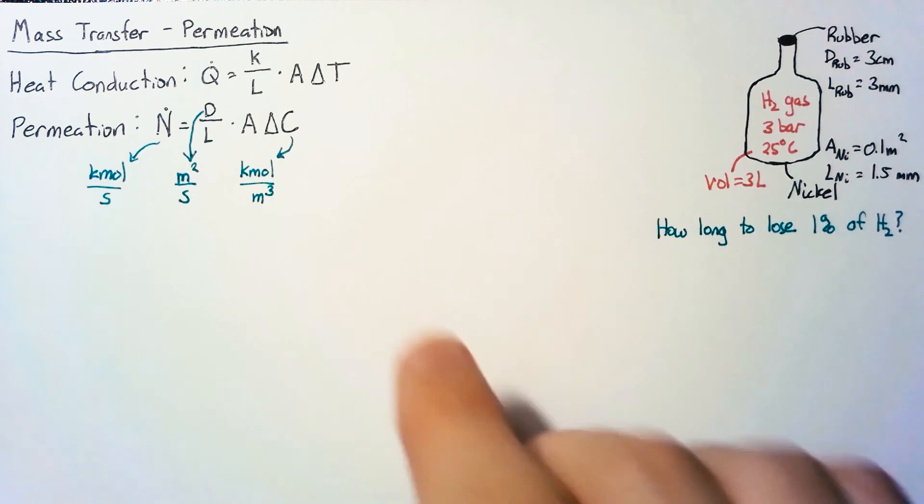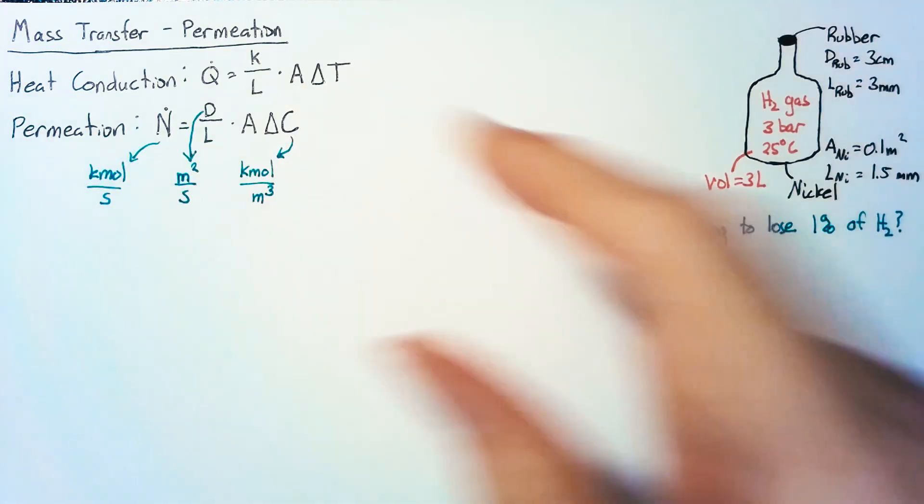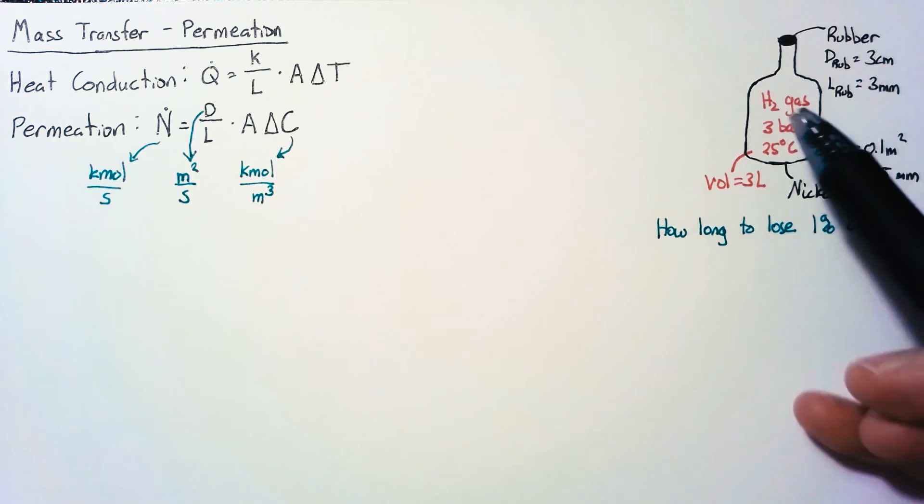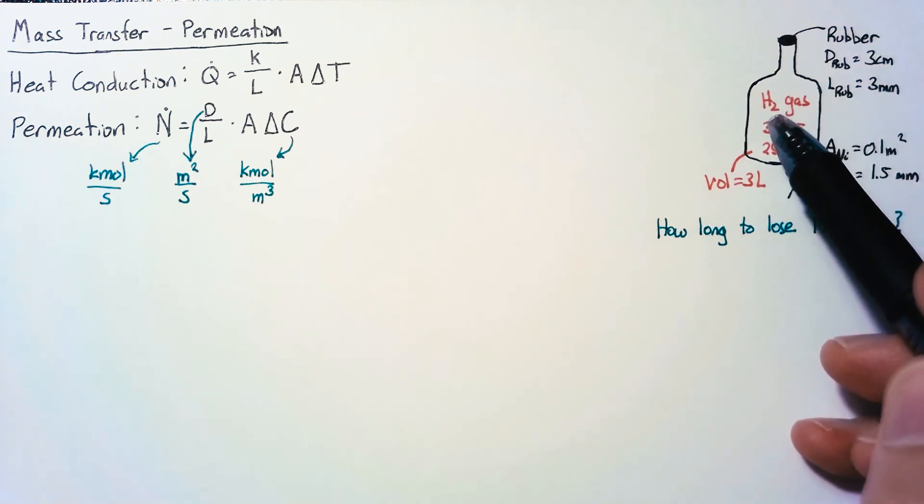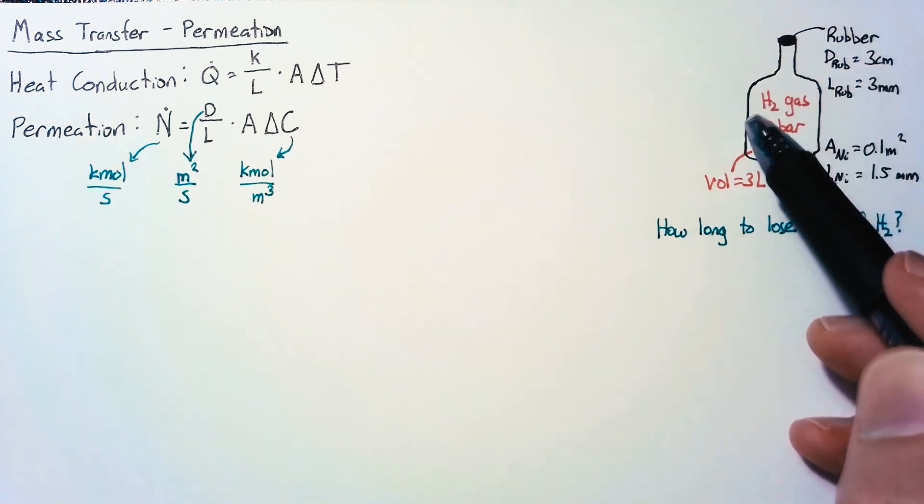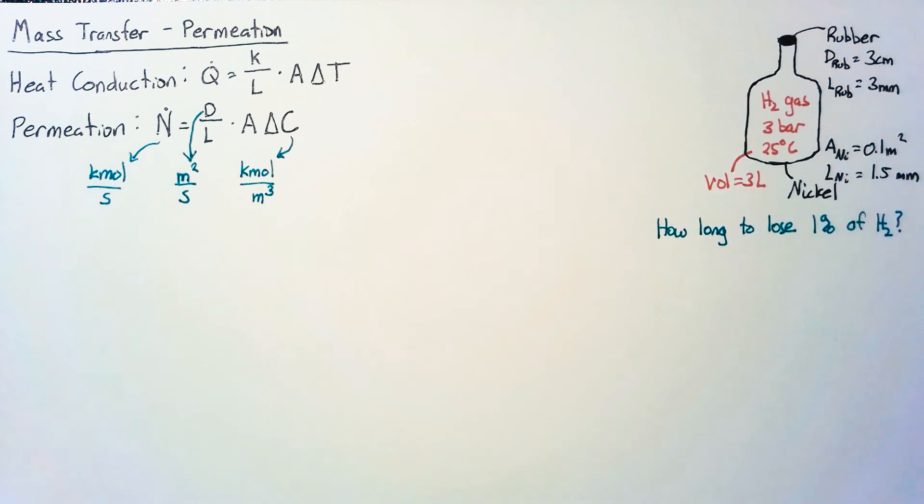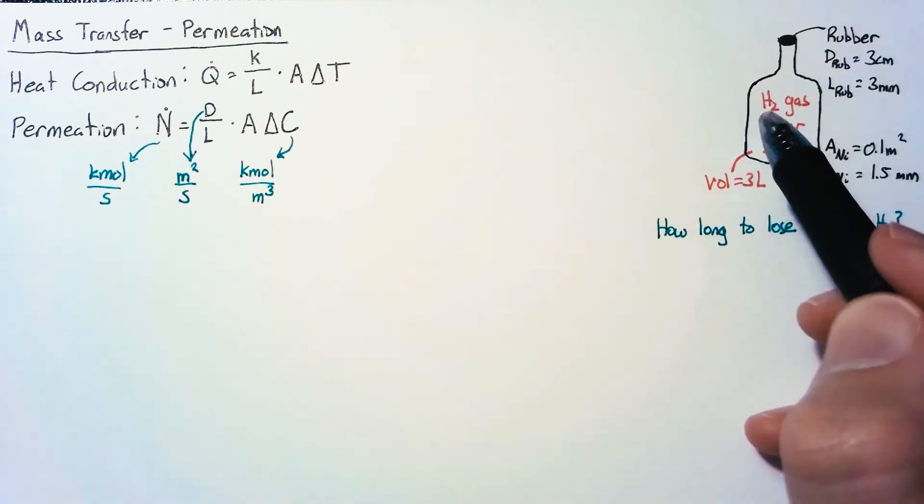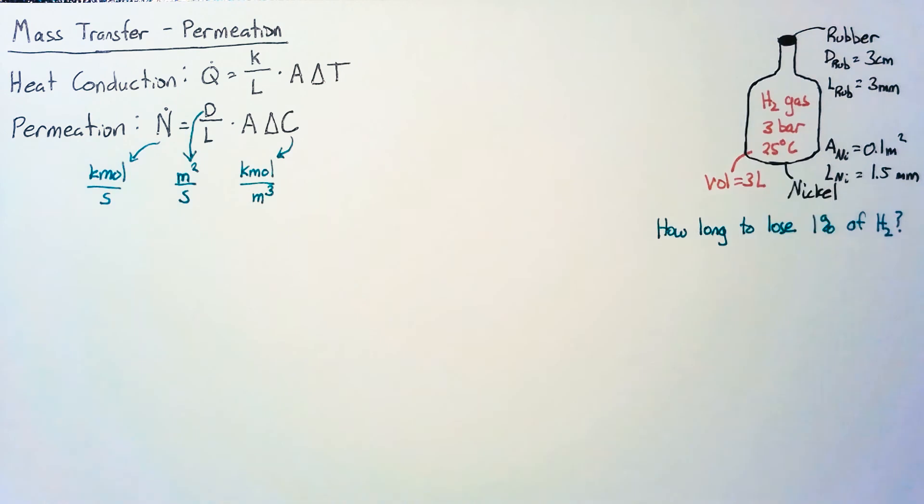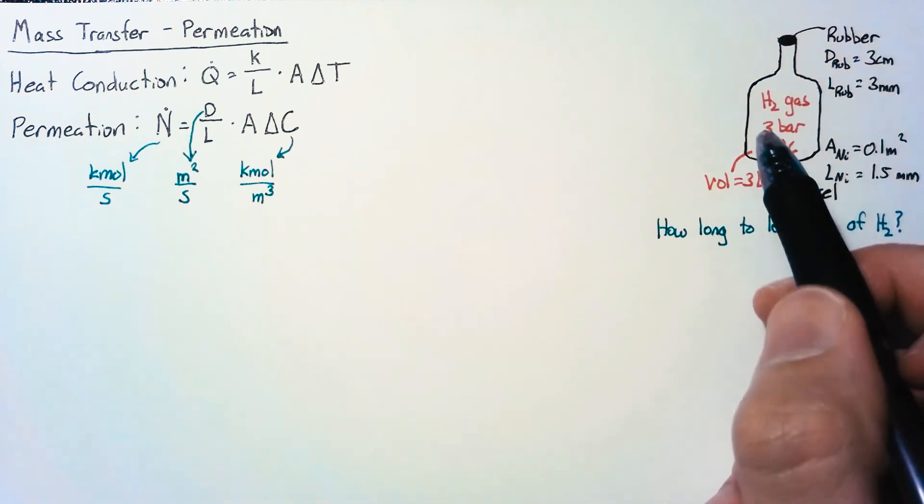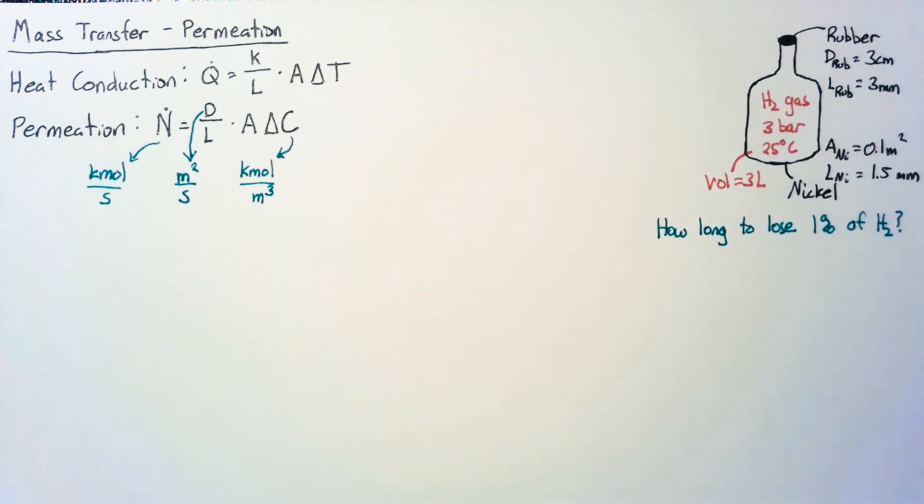For heat conduction, the temperature on the inside of our flask is exactly the same as the temperature on the surface of our solid. Unfortunately that's not true for our molar concentration. Just because the concentration of hydrogen right above the surface is some value doesn't mean it's the same inside the solid.